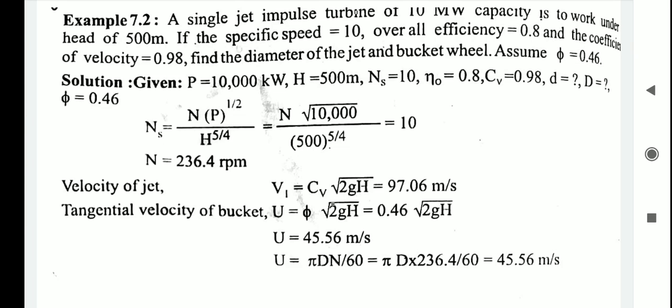In this video, we are discussing the second problem of a Pelton wheel. A single jet impulse turbine of 10 megawatt capacity is to work under a head of 500 meters. The specific speed is 10, overall efficiency is 0.8 (80%), and the coefficient of velocity Cv equals 0.98. Find the diameter of the jet and the bucket wheel. The speed ratio phi value is given as 0.46.